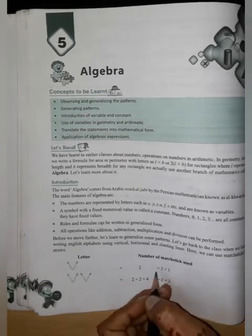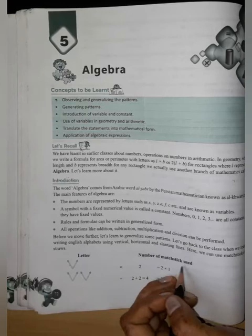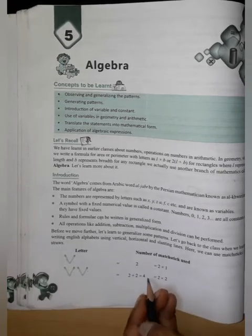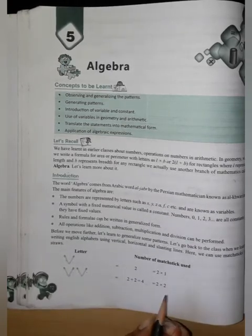We have two matchsticks. Two is equal to two into one, number of matchsticks used. Then one, two. How do we write it? One and two, one and two. Total, how do we use it? Two plus two is equal to four. And two into two means four.